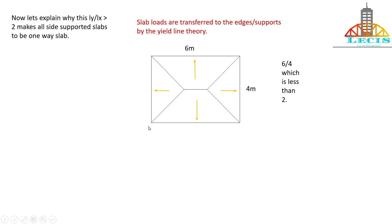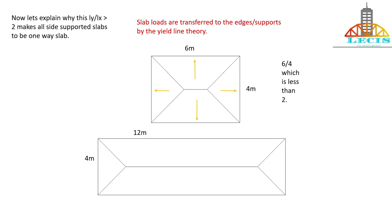This describes the amount of load transferred to the edges. The trapezoidal part of slab load is transferred to the long edges, and the triangular part is transferred to the short edges. Since the area of the trapezoid is greater than the area of the triangle, larger loads are transferred to the long edges. There will always be more bending in the short span.